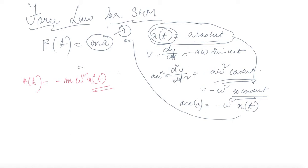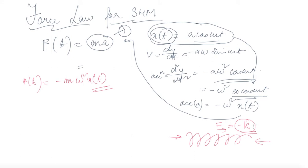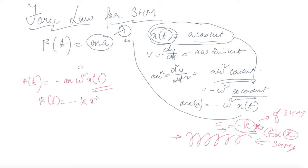Comparing this with a spring: when you compress a spring, a restoring force develops, and F = -kx, where k is the spring constant or stiffness of the material. In simple harmonic motion, displacement x is proportional to force — force is proportional to displacement. So we can also write F(t) = -k x(t).